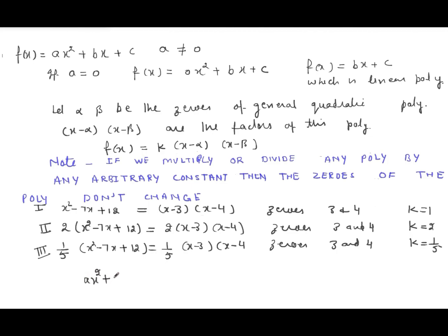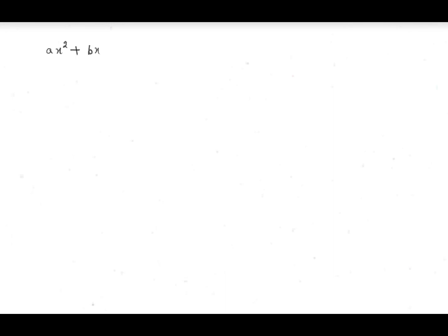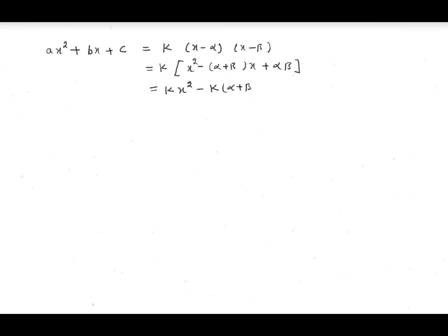So we write ax^2 plus bx plus c is equal to k(x minus alpha)(x minus beta). Now expanding these two factors: k times [x^2 minus (alpha plus beta)x plus alpha·beta], which gives k·x^2 minus k(alpha plus beta)x plus k·alpha·beta.